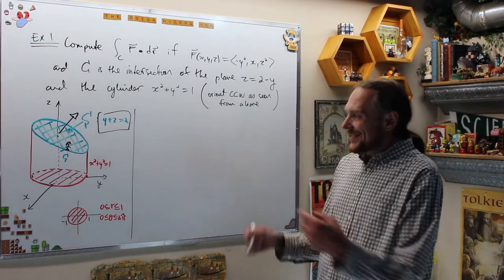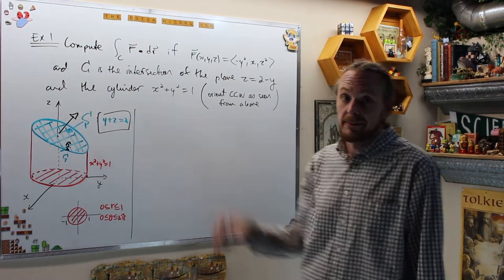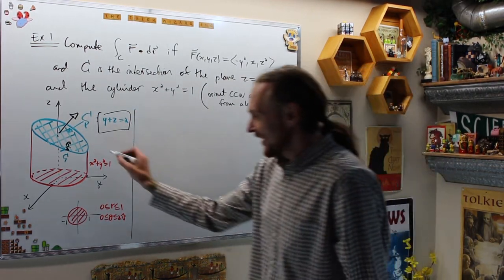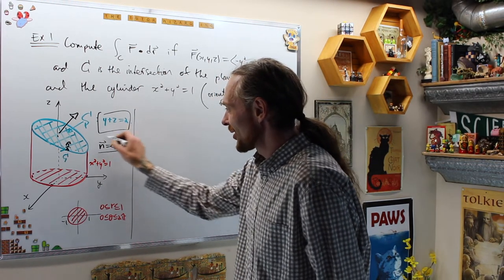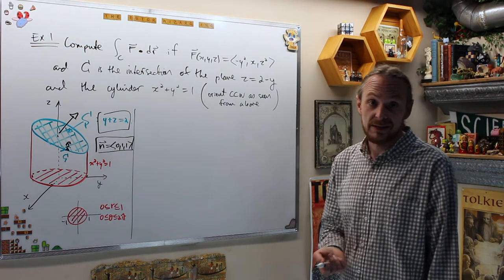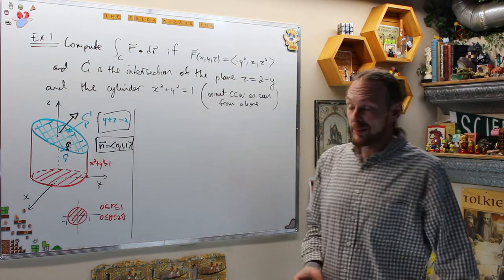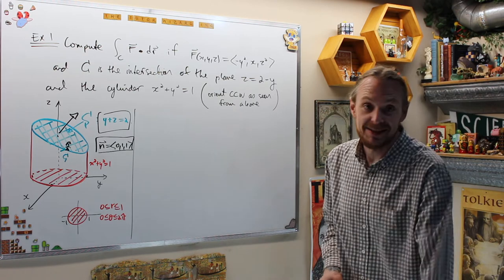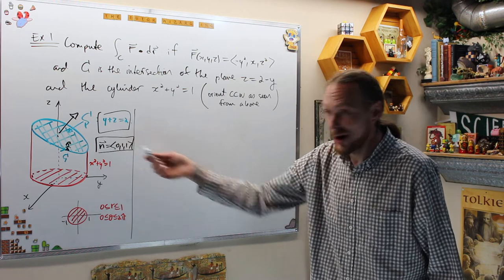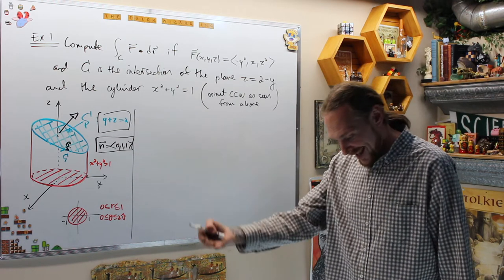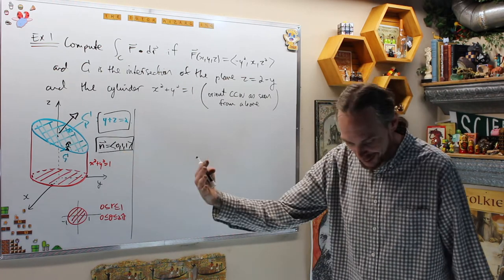Now I know what I need: the curl of F and the unit normal vector to the plane — our surface S. If you watch my linear algebra videos on the normal equation and general equation of a plane, when a plane is given in general form, the normal vector is just the coefficients in front of x, y, z. So the normal vector to this surface y + z = 2 is (0, 1, 1). I'll derive it algorithmically too, but that's the vector we'll get.